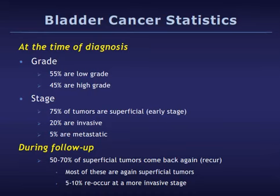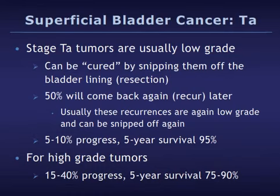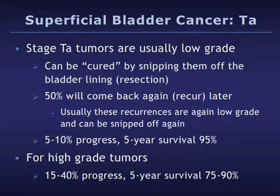Ta tumors are the earliest, most superficial tumors and are usually low grade. They can be cured by resection — snipping them off the bladder lining. After this procedure, however, the bladder must be closely watched, as 50 percent of these tumors will recur. Fortunately, recurrences are usually low-grade superficial tumors again and can simply be resected. Of low-grade tumors, five to ten percent progress, and the five-year survival rate is 95 percent. With high-grade tumors, 15 to 40 percent progress, and the five-year survival rate is 75 to 90 percent.